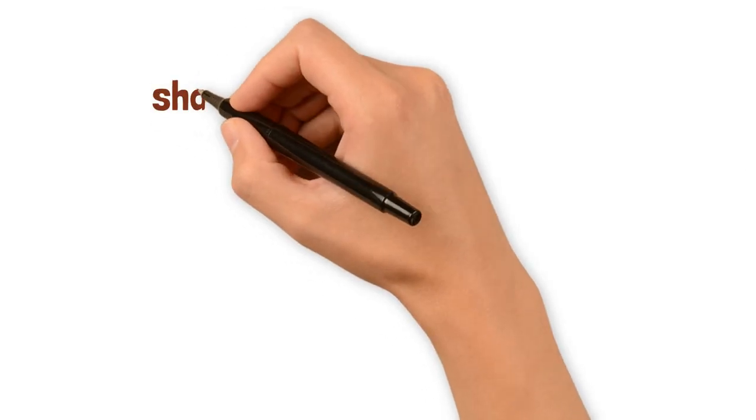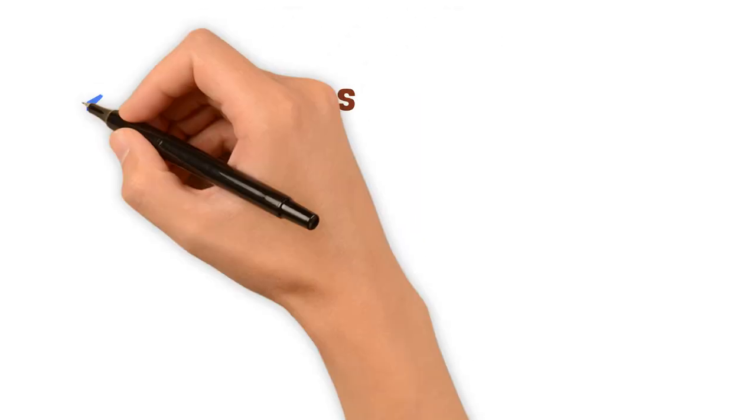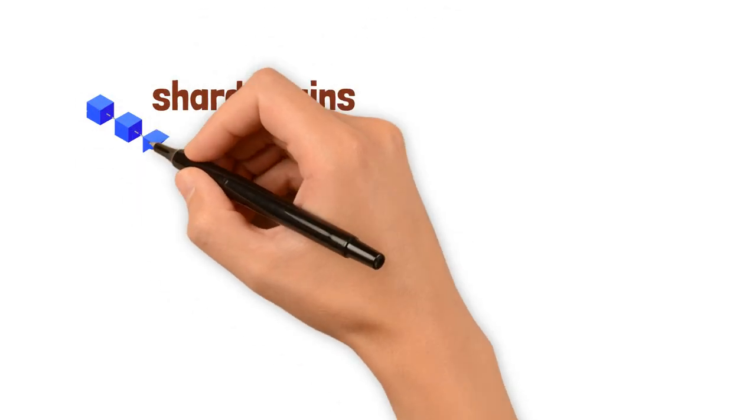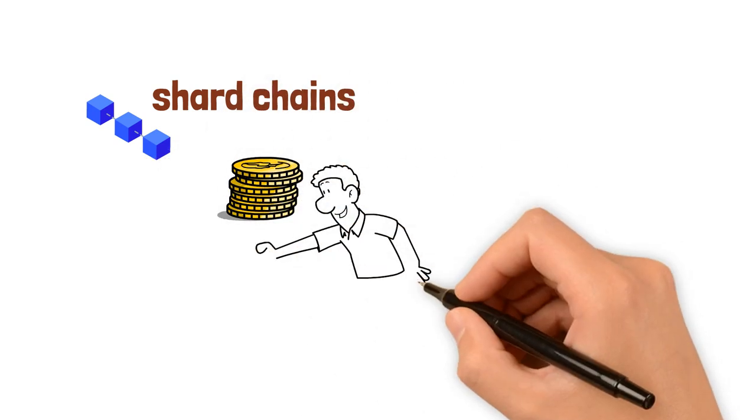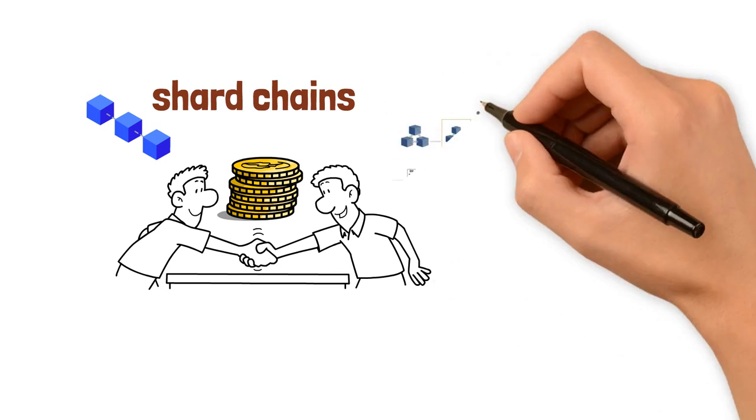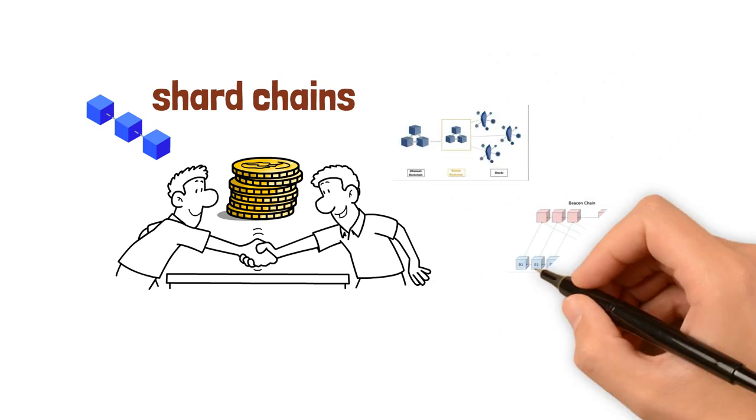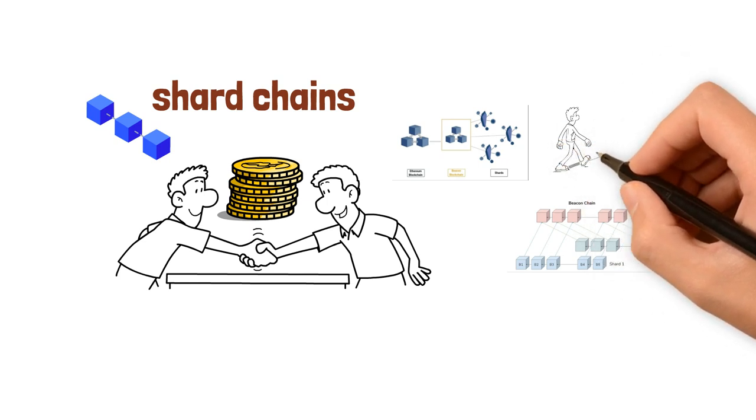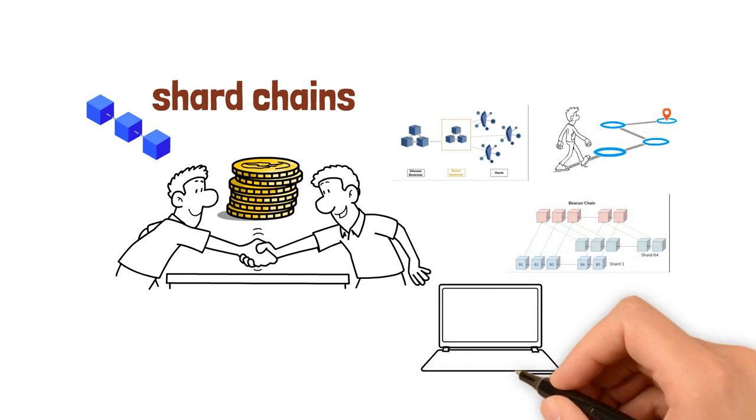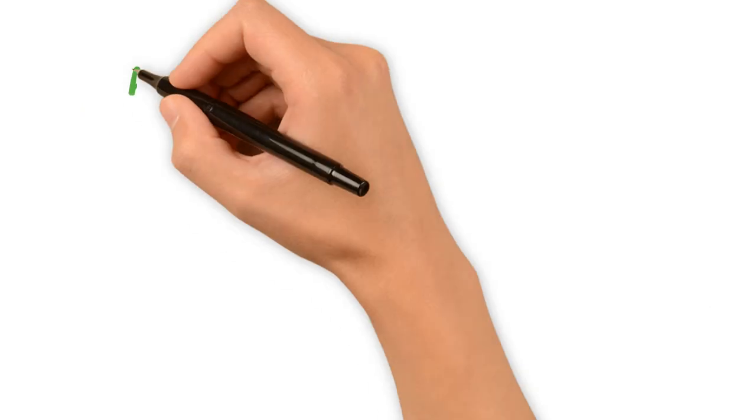The upgrade also introduces shard chains, which divide the Ethereum network into smaller chains, allowing parallel processing of transactions and smart contracts. These shard chains work in conjunction with the beacon chain, which coordinates network consensus and manages validators. The beacon chain stores and maintains the registry of validators and facilitates communication between the shards.